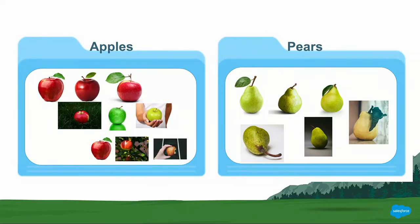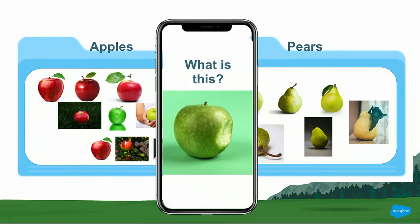Now look at this improved data set. On the apple side, we see different colored apples — green, red, yellow — with different colored backgrounds and leaves, apples being held in somebody's hands, and so on. Now if we try to analyze that same green apple image, we don't have a green apple with a green background in our training set, but we do have green apples and apples with green in the background. This is where we talk about representative data sets — are the images we're using to train our model representative of what it might see in the future? Using that historical context, it can now correctly predict this as an apple.